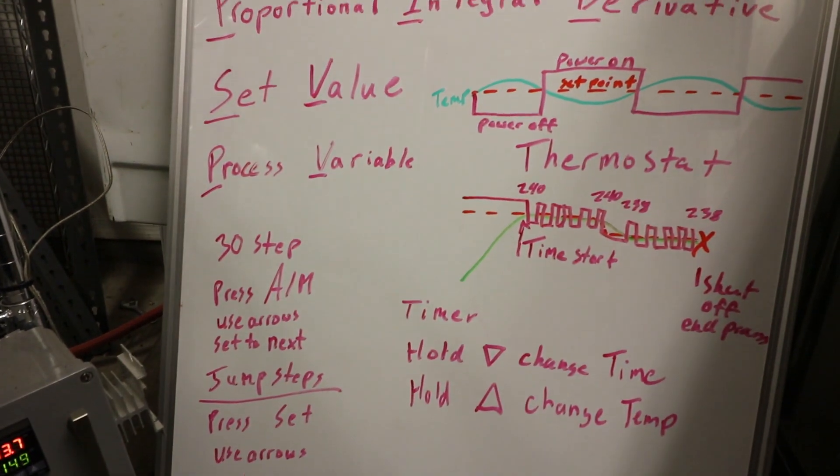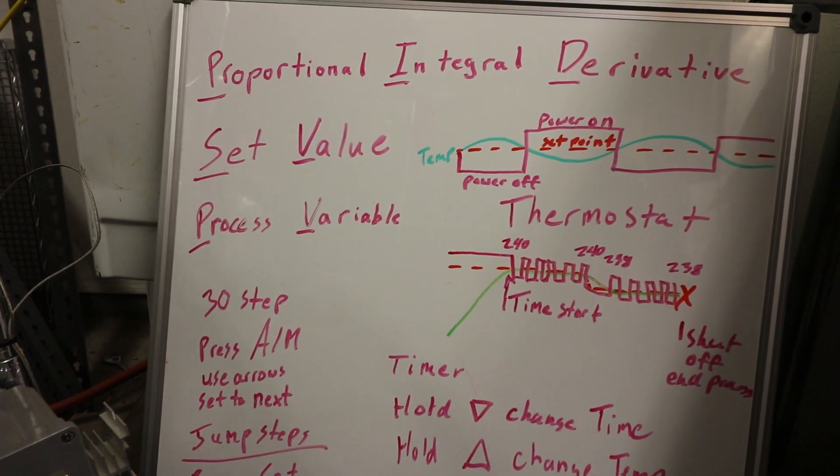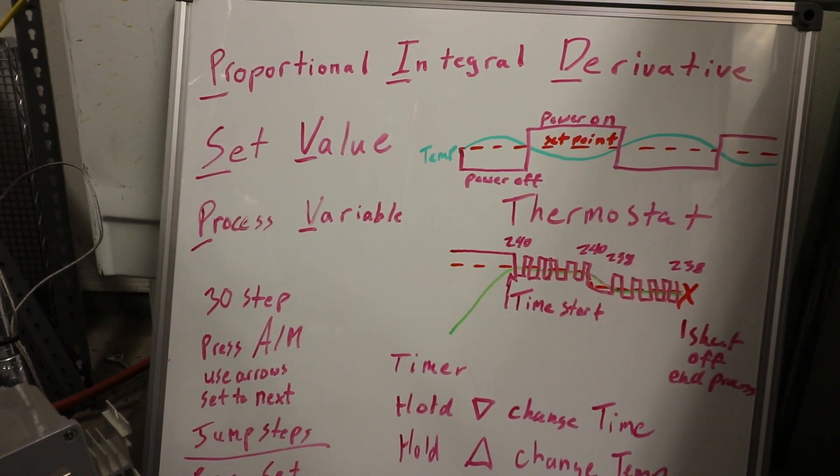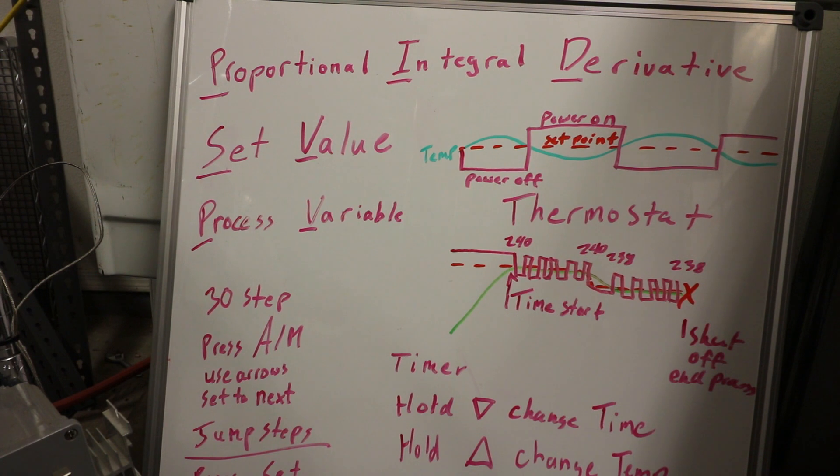So for starters, a PID controller stands for proportional integral derivative. Basically they are fancy temperature controllers that will monitor the temperature drop and rise and calculate for that using algorithms, making it maintain a temperature a lot more accurately than a thermostat.